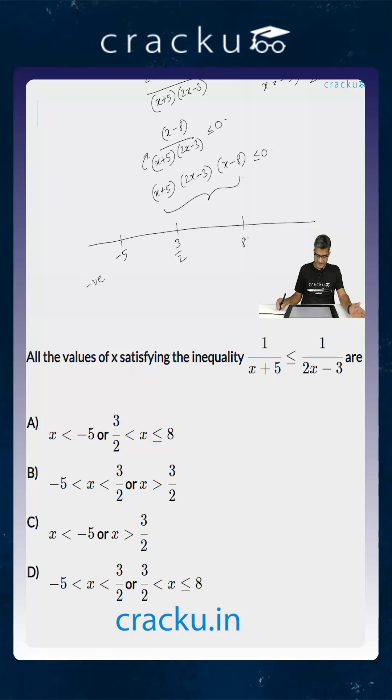If x lies between -5 and 3/2, only x+5 will be positive and the remaining two will be negative, so the overall product of two negative numbers will be positive.